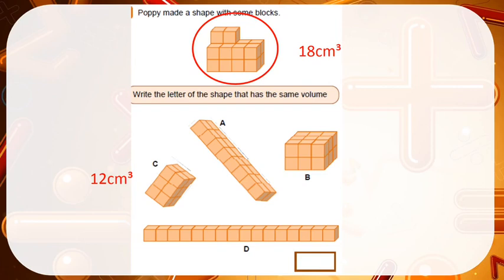Poppy made a shape with some blocks. Write the letter of the shape that has the same volume. I found the volume of the first shape by counting how many cube blocks it is made out of. I can see there are 4 sets of 4 and 2 on top, which means all together I have a total of 18 blocks. Looking at shape C, each section is made up of 4 blocks and I have 3 lots of that, which means a volume of 12cm cubed — so that does not have the same volume.